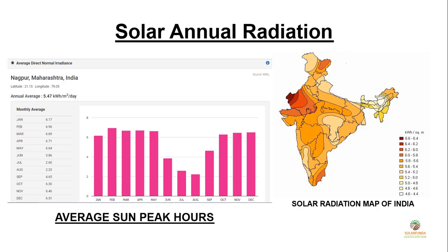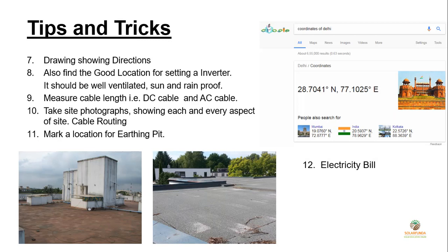You can also find your site's solar energy radiation data online. The next step is to draw the design of your location showing all dimensions and directions, all trees and walls, and how much area is available for placing the solar panels.